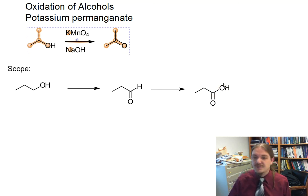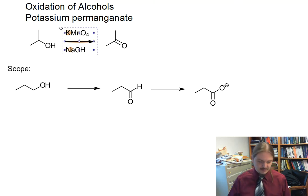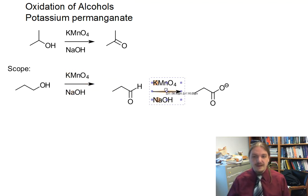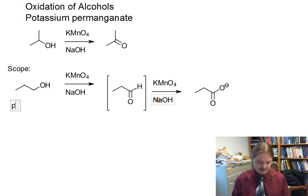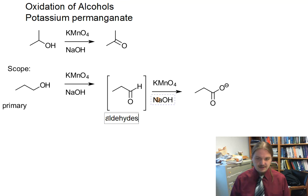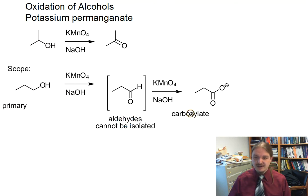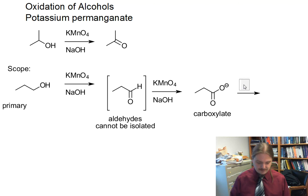Not the carboxylic acids directly, because we're in basic solution — but once neutralized, you would get carboxylic acids. Like the chromic acid or Jones oxidation, the aldehyde is also reactive and cannot be isolated. If you started with an aldehyde, you would get a carboxylate anion out of this reaction. Once you neutralize the reaction by adding some kind of acid, you'll get the carboxylic acid.